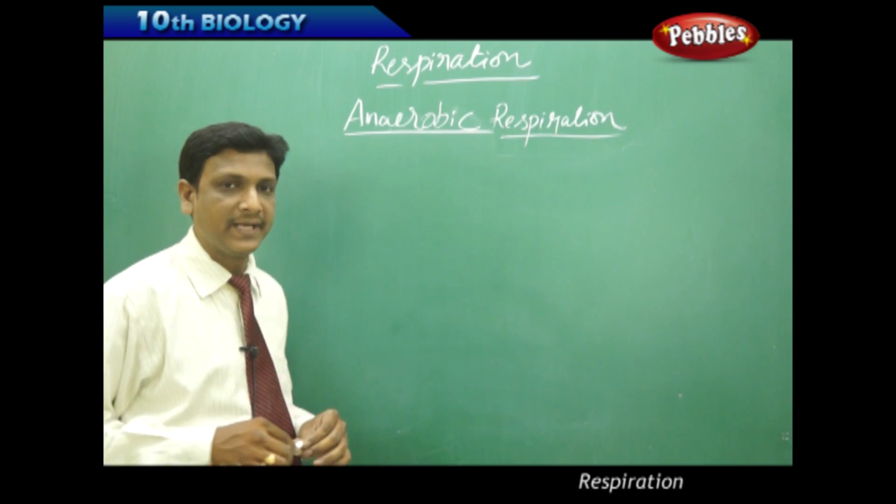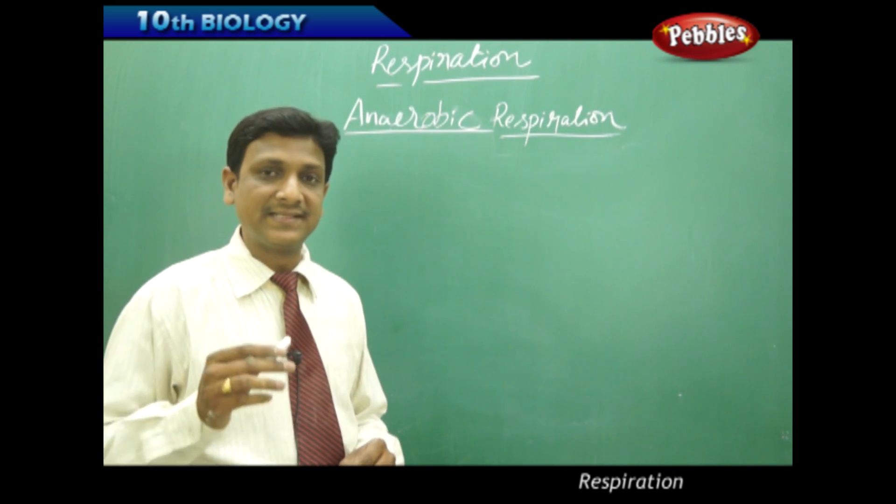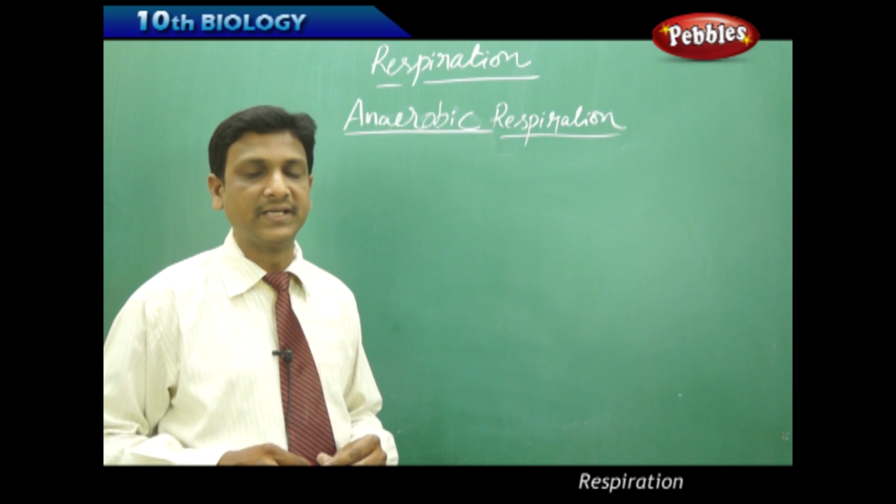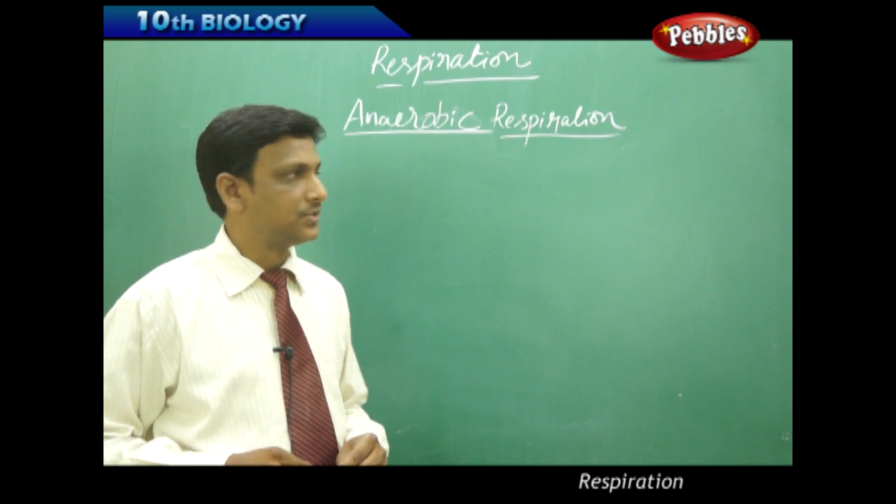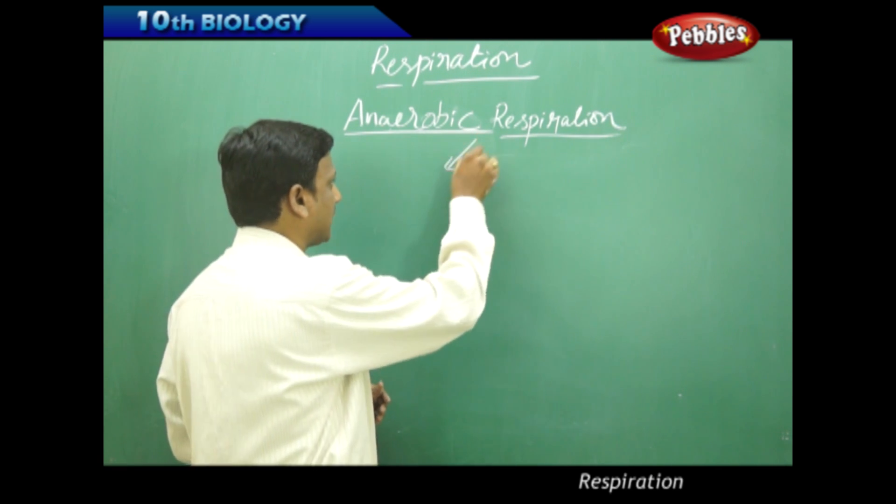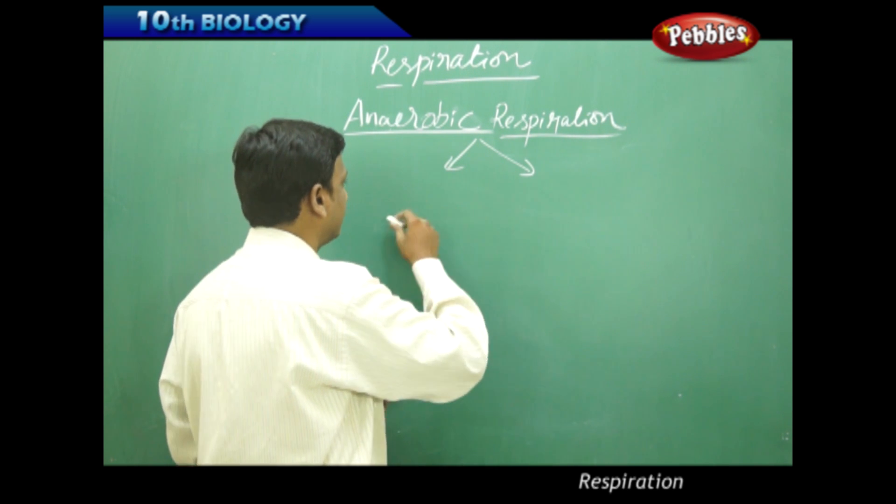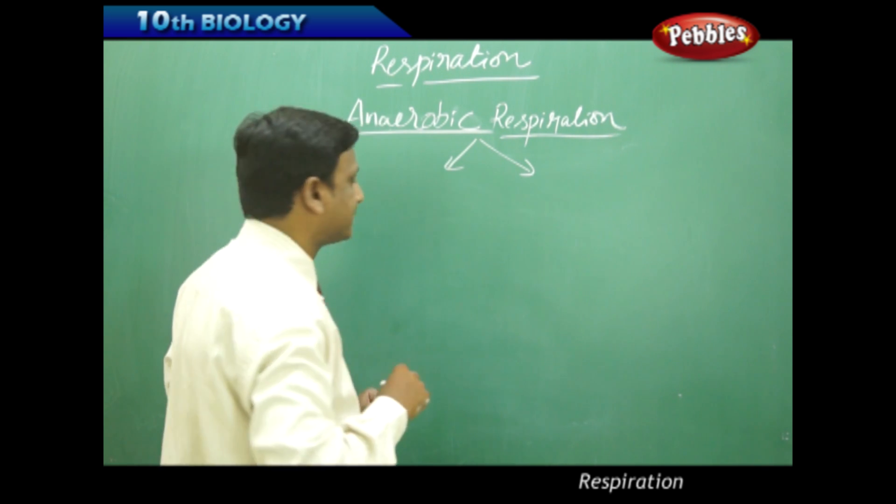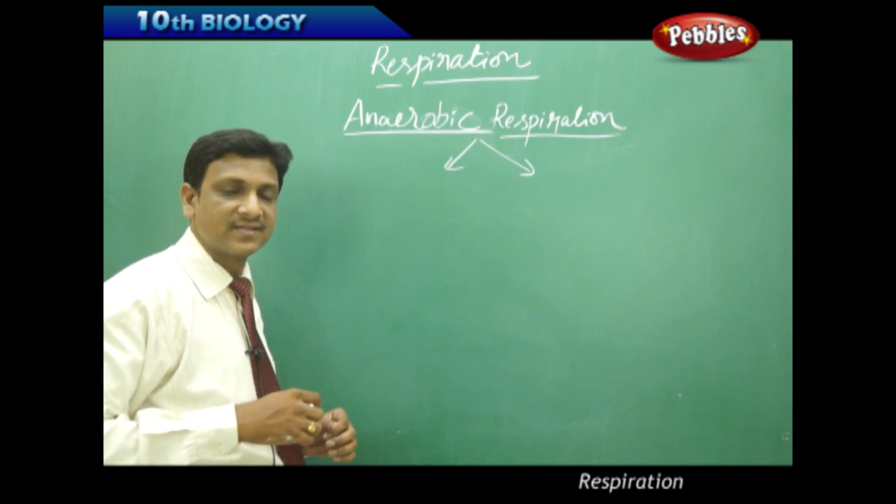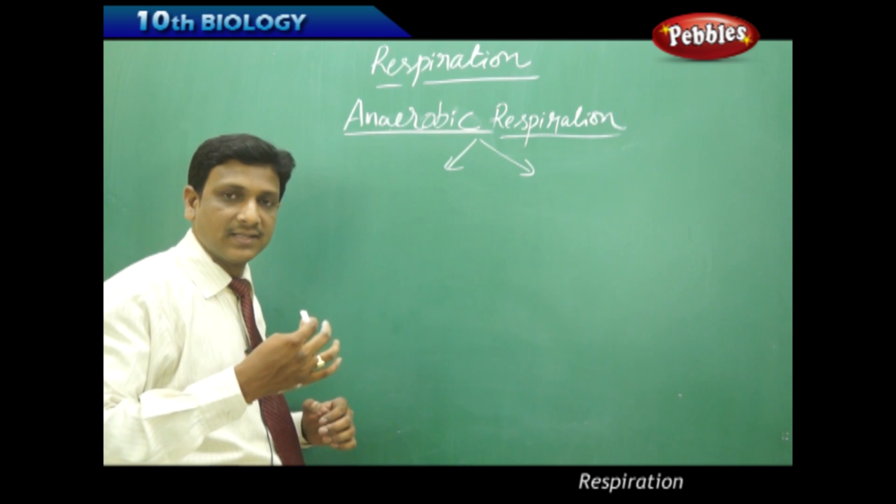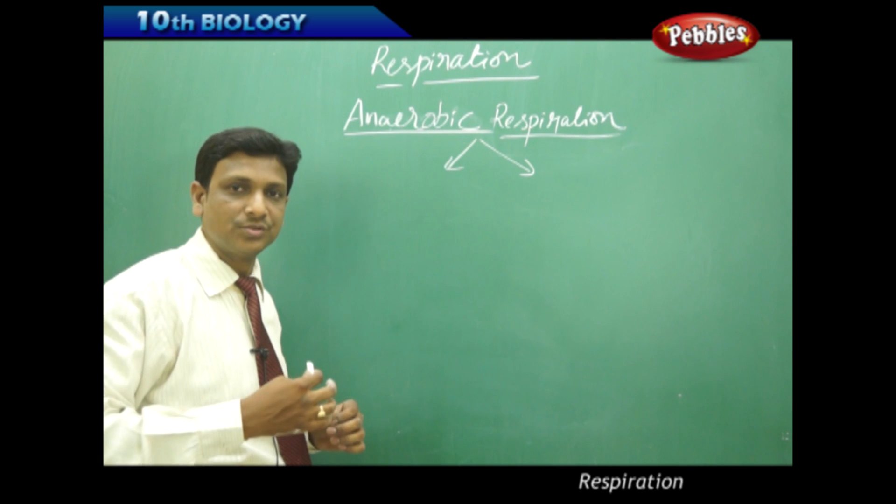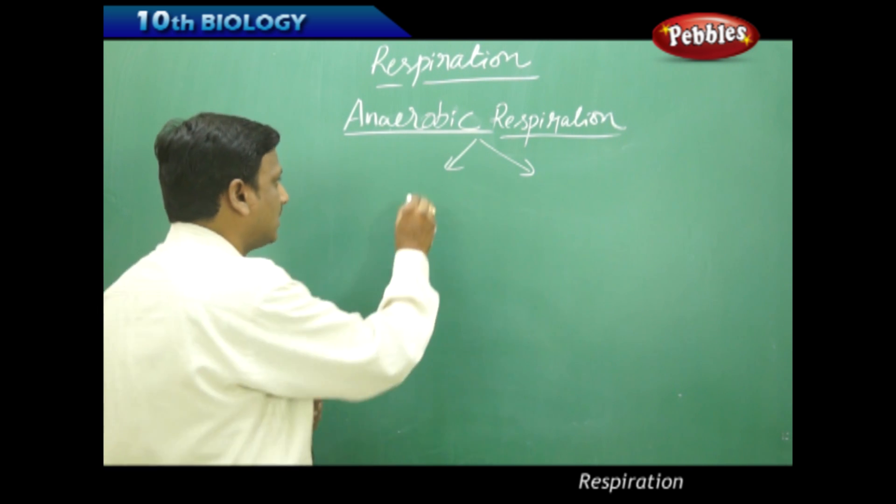Now let us look at anaerobic respiration and certain activities linked with it. Anaerobic respiration is basically two types. In one kind, like in bacteria and even in our muscles in certain situations, lactic acid is produced. In another case, like in yeast, ethanol alcohol is produced.